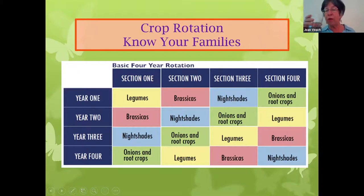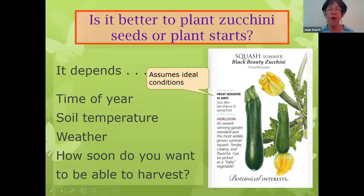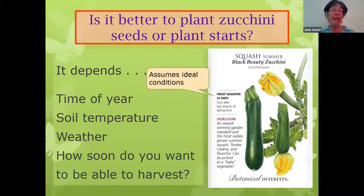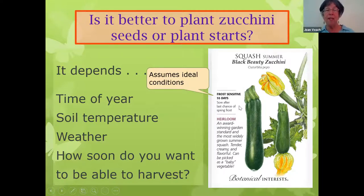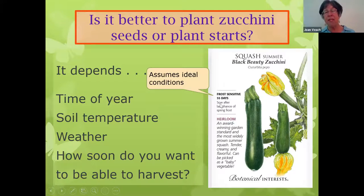That brings us to the end of our cool weather crops. We're going to start the warm weather crops with zucchini. Is it better to plant zucchini by seeds or by starts? The answer depends — on the time of year, the soil temperature and weather, and on how soon you want to be able to harvest. This is a seed packet for zucchini. It says it's frost sensitive, so plant after the last chance of spring frost. In our climate, that's around Mother's Day, so we recommend not planting warm season crops until after Mother's Day. Then it says 55 days — that means from when you plant the seed until you harvest those beautiful zucchini, assuming ideal growing conditions.